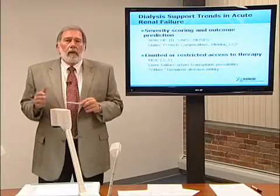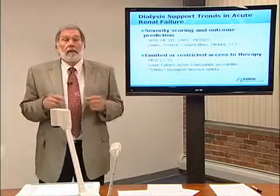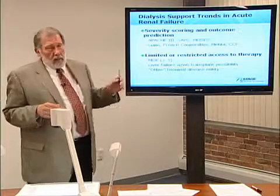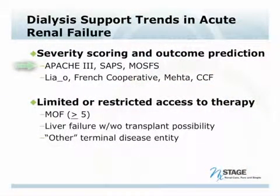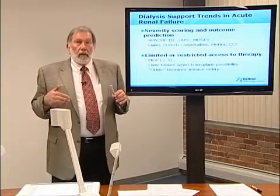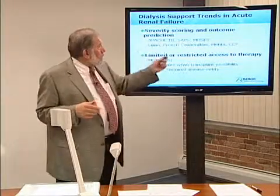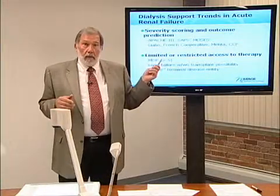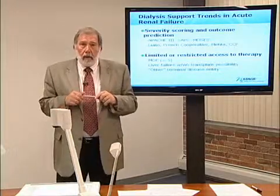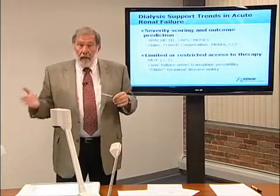Now, how do you figure out who should get what form of therapy? We'll look at severity scoring as a method. One of the earlier approaches was the Apache system. The Apache system, the SAP system, and the multi-organ system failure grading were all ICU scores. Renal-specific scoring began with the Leano score out of Madrid — the first well-defined acute renal failure scoring system — then developed through the French cooperative, the Picard database score, and the CCF score. These give you the level of severity of the patient entering dialytic support.